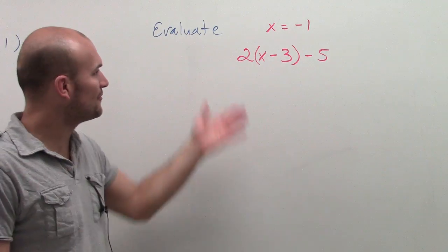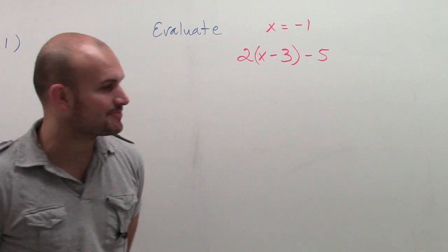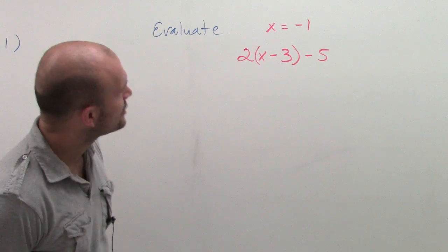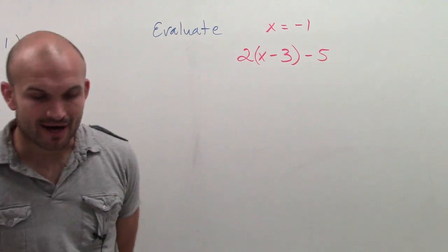I want to evaluate x equals negative 1 for the algebraic expression, this is the same thing I was saying before: 2 times x minus 3 minus 5.